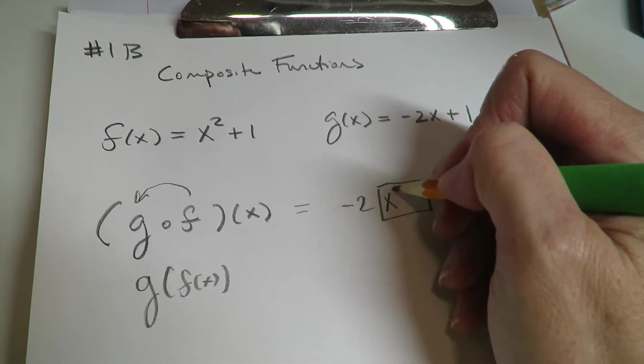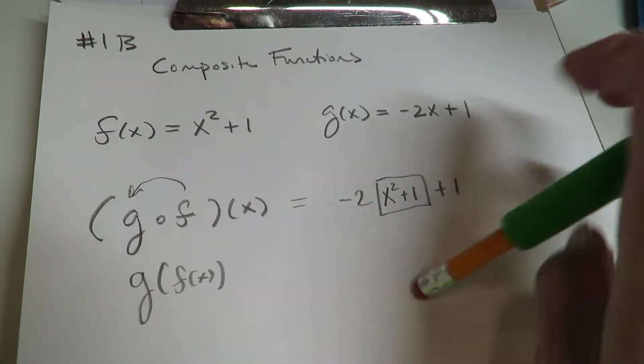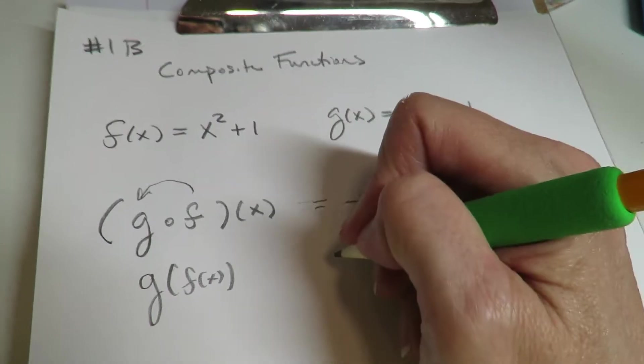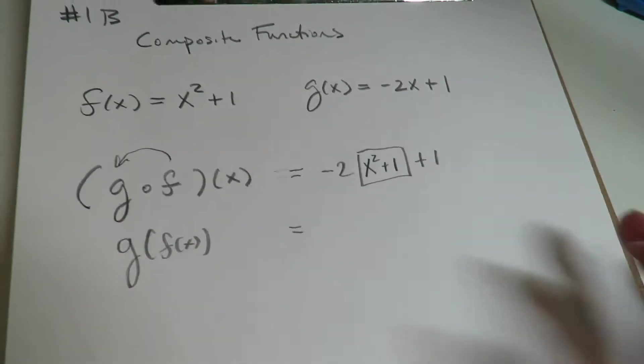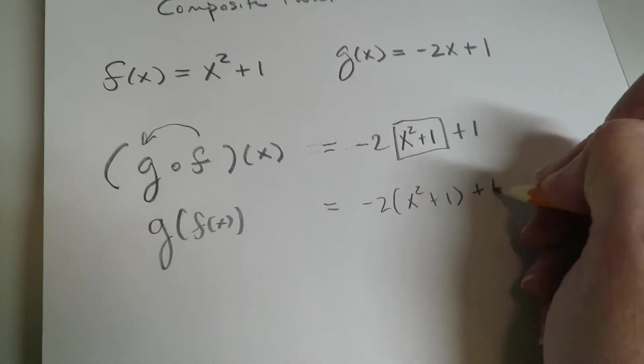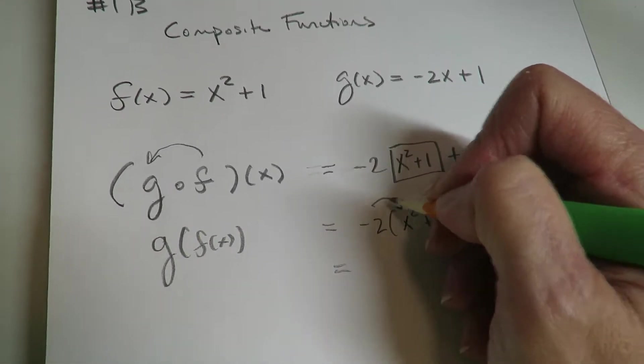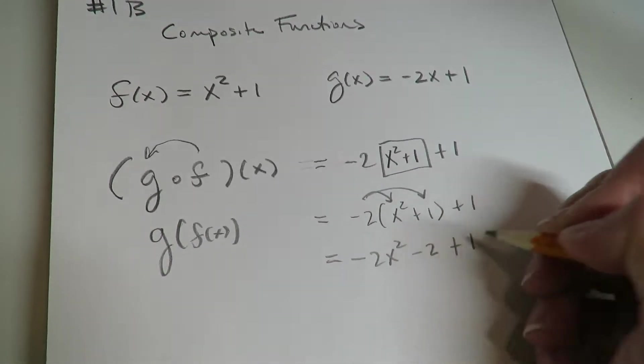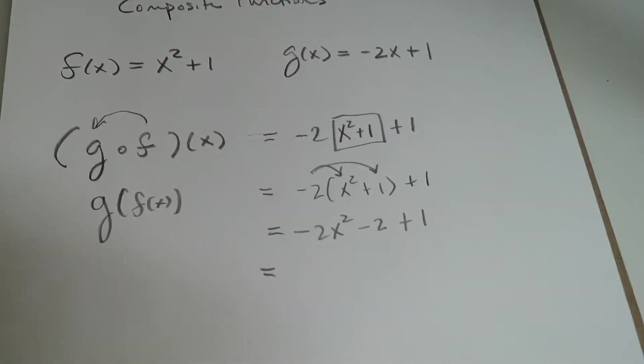In the box, we'll put X squared plus 1. Let me just move everything a little bit closer here. If I take off the box and I distribute the negative 2, we get that.